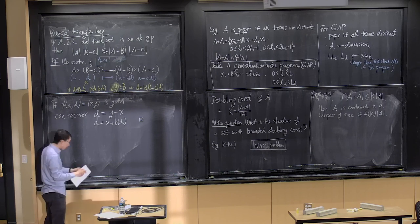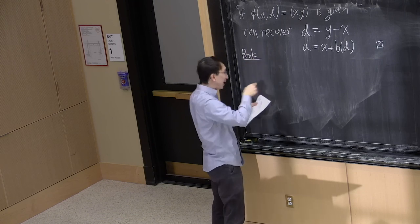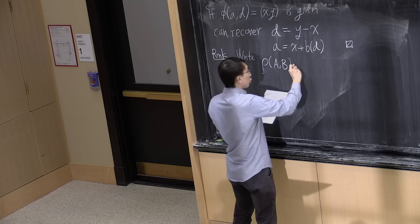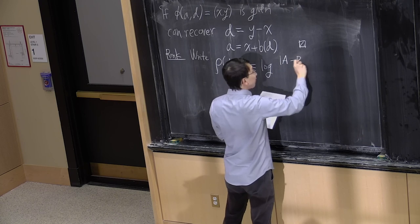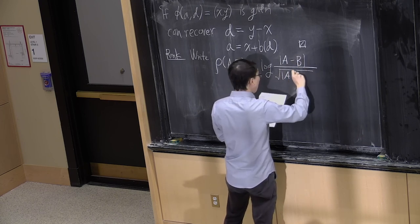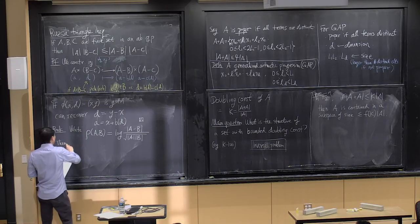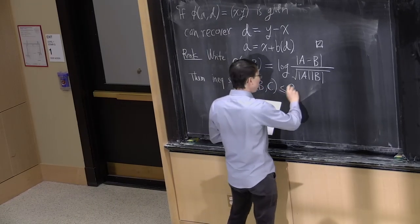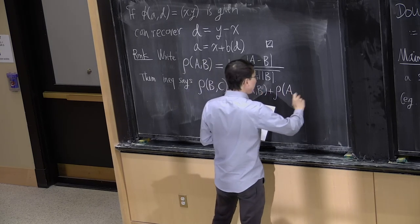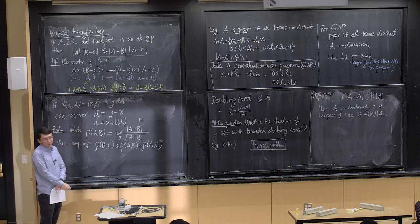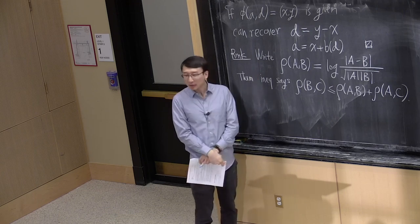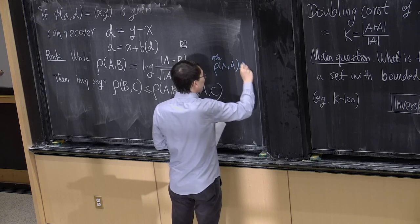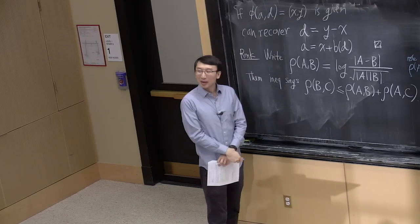The reason it's called the triangle inequality is that if you define ρ(A,B) = log(|A−B| / √(|A|·|B|)), then the inequality says ρ(B,C) ≤ ρ(A,B) + ρ(A,C), which has the form of a triangle inequality. Don't take it too seriously as a distance — ρ(A,A) is not 0 — but it has that form, hence the name.